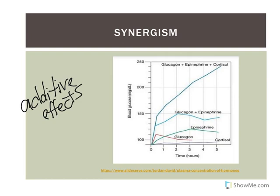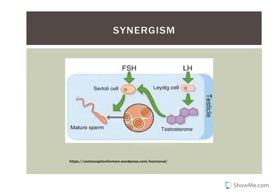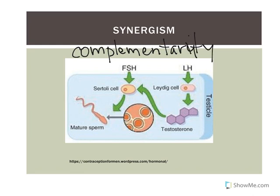Synergism can also involve complementarity, where each hormone stimulates a different step in a process. An example is FSH, which initiates early steps in spermatogenesis, while testosterone is important for maintaining spermatogenesis. They are involved in different steps of the same process, so they are said to exhibit complementarity — they complete each other and enhance each other's roles.